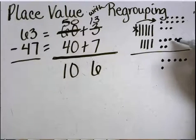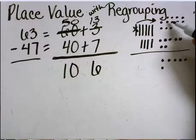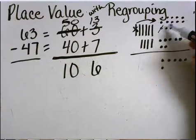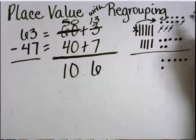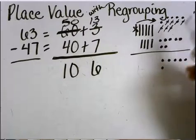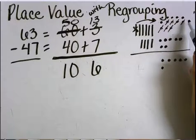If you need to, you can take away the 7 ones from the 13 ones by crossing them out 1, 2, 3, 4, 5, 6, 7 to see that you have 6 ones left over.